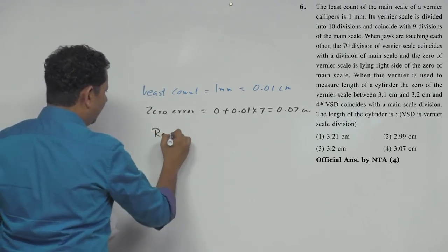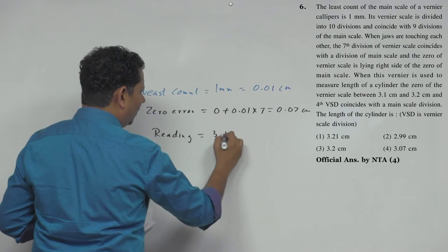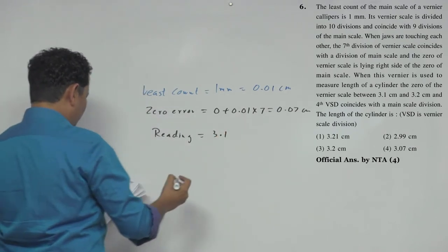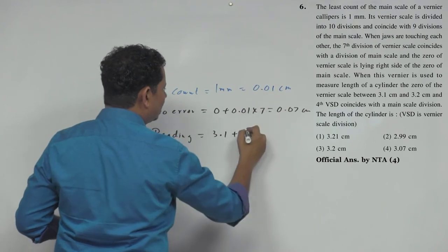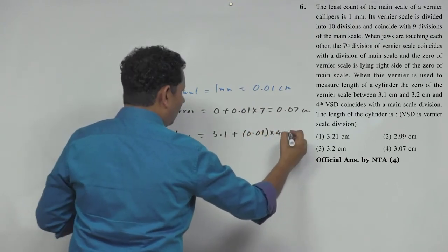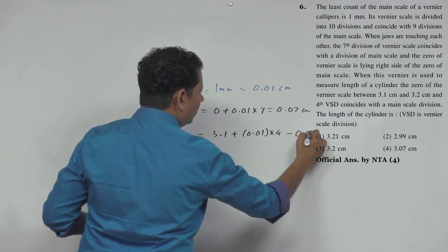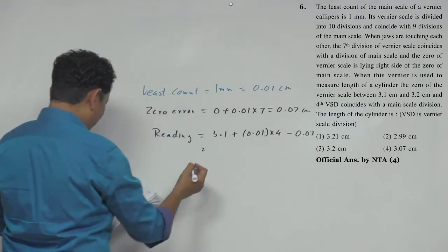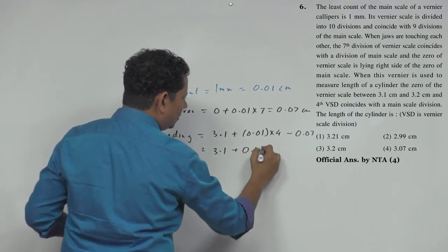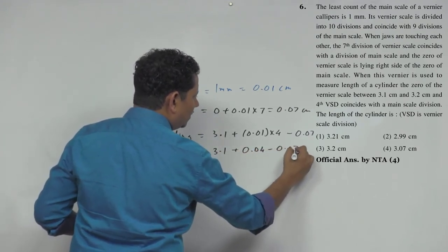Your reading will be equal to 3.1, because your reading is between 3.1 and 3.2. So 3.1 plus your least count 0.01 multiplied by 4, minus your error 0.07.